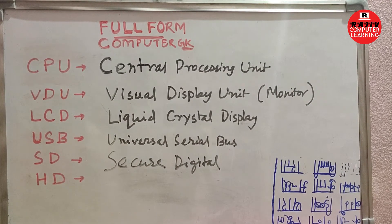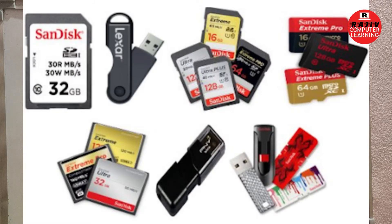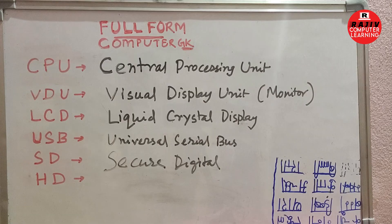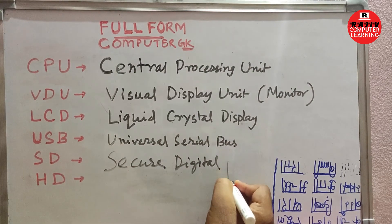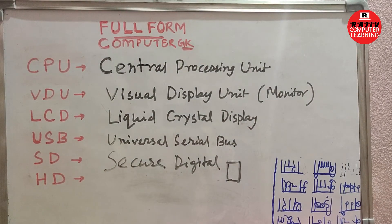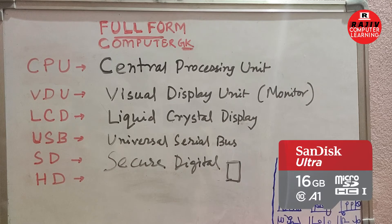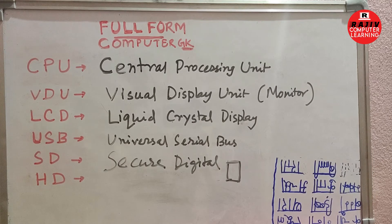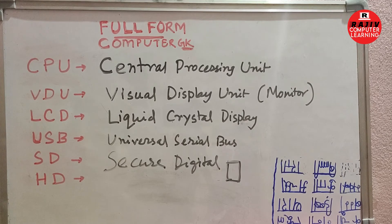SD stands for Secure Digital. Here are examples of SD cards — these are small memory chips called SD cards. Micro SD cards are smaller than SD cards. We use SD cards in cameras and computers or laptops to store data, while micro SD cards are used in mobile phones.